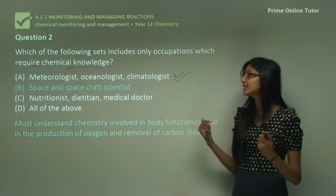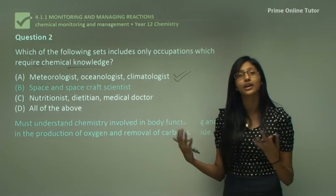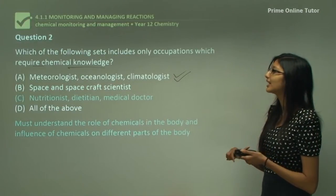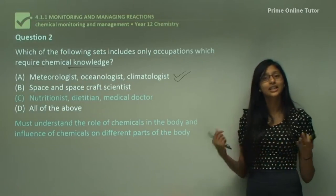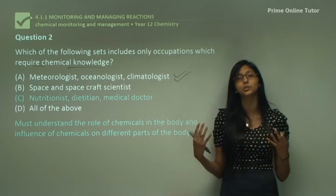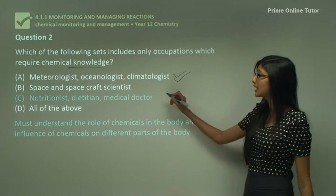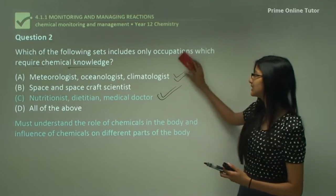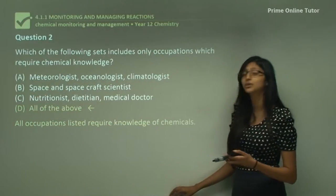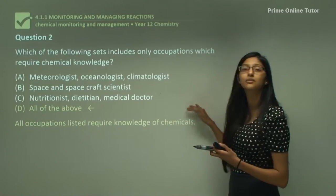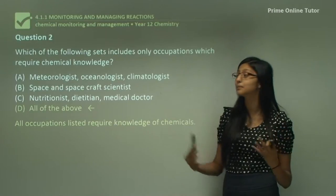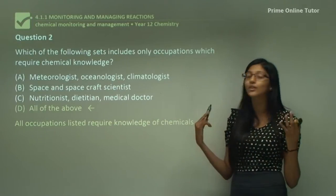Astronauts travelling in rockets do not have a supply of oxygen like we do, so these scientists need to look at how to provide oxygen and how to efficiently remove carbon dioxide. Option C includes nutritionists, dietitians, and medical doctors, who are involved with our health and need to know the chemicals in our body and how they influence different parts of it. Our answer is D — all of these people require chemical knowledge, showing how important chemistry is across many different fields.